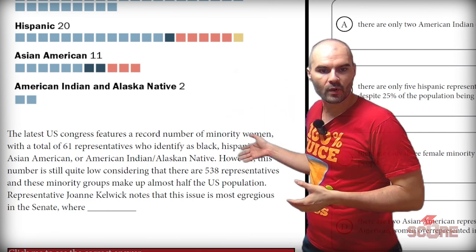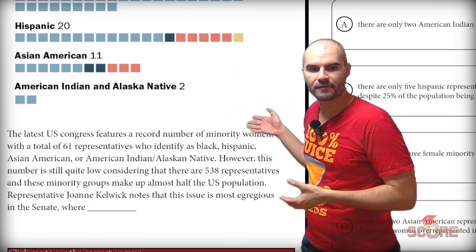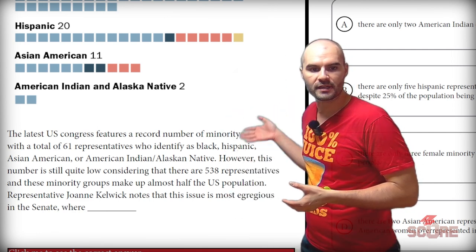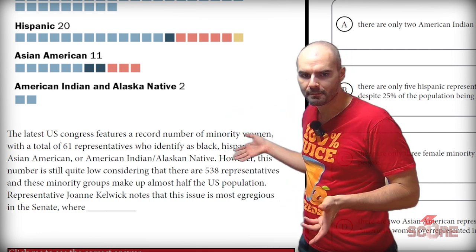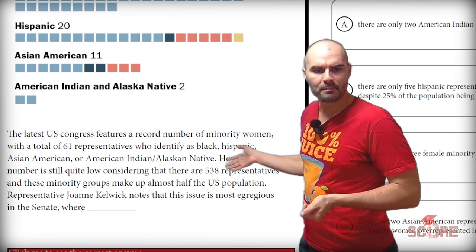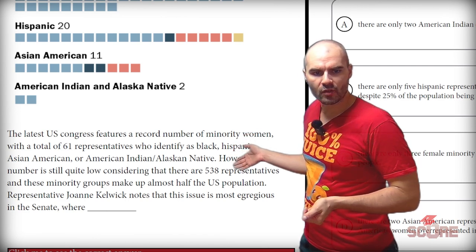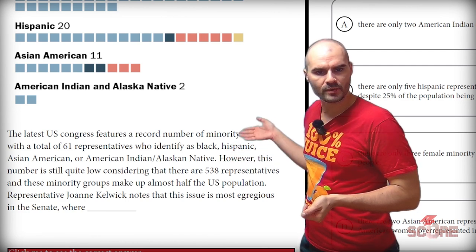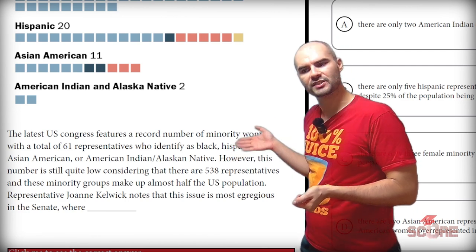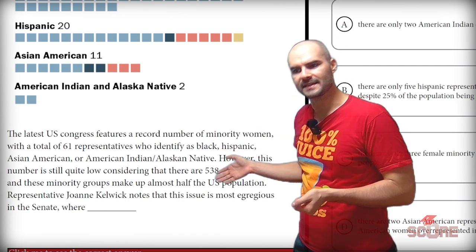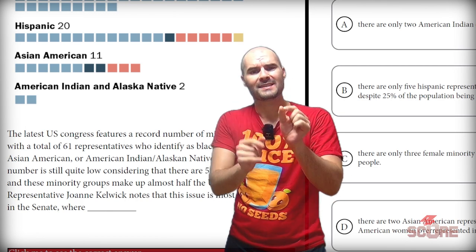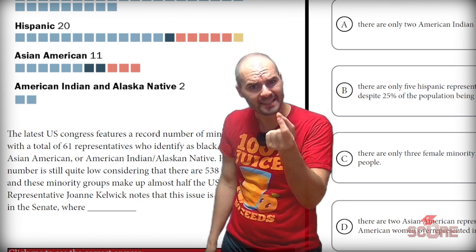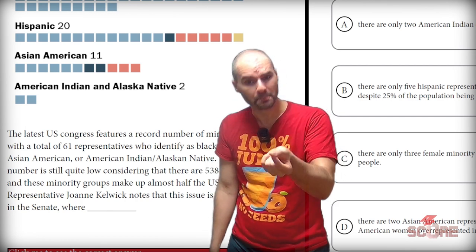This number is quite low considering there are 538 representatives and these minority groups make up almost half the population. Representative Joanne Kellwick says this issue is most egregious in the Senate, so we really should focus on the Senate since that's the sentence that I'm trying to complete.